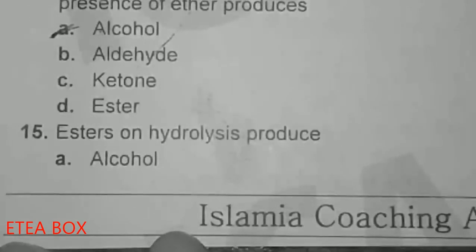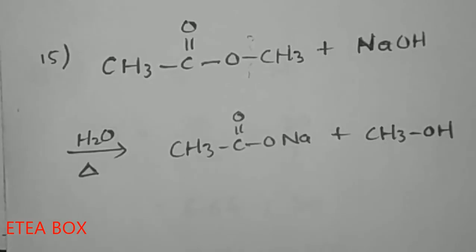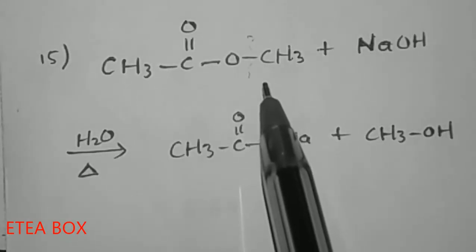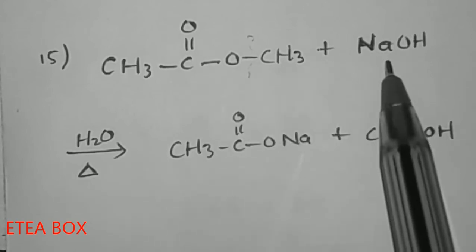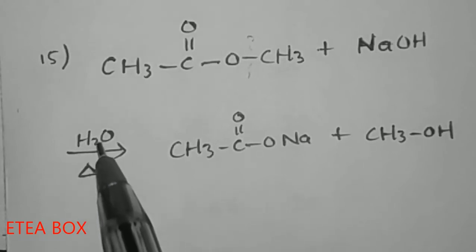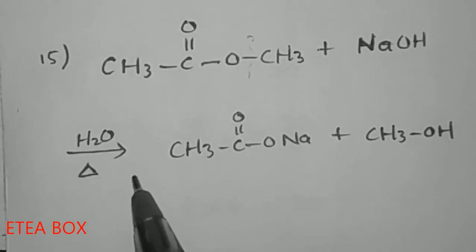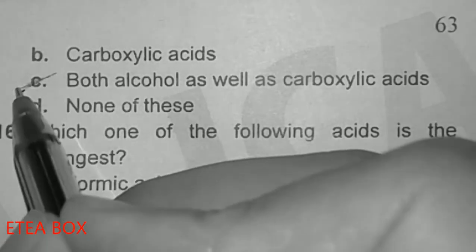Ester on hydrolysis produces: when we do hydrolysis of an ester, this reaction is called saponification. It produces alcohol as well as carboxylic acid. When ester reacts with NaOH in the presence of water, hydrolysis occurs, producing sodium acetate plus CH₃OH. Option C is correct.